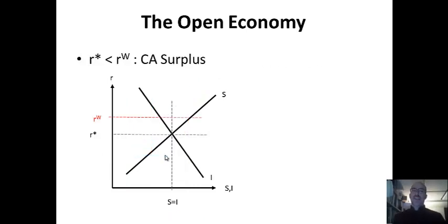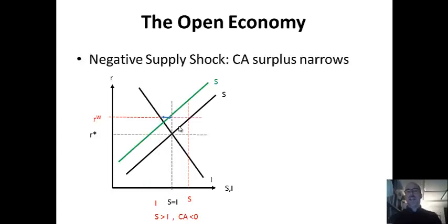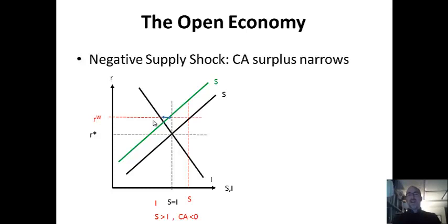Now let's look at a current account surplus. Here the world interest rate is higher than the domestic interest rate. Savers can send their money abroad and earn more, but investors face competition and invest less because capital is more expensive. So you have high savings and low investment — savings greater than investment — and the current account is positive: a current account surplus. This is the lending country where capital is cheap at home and expensive abroad. If we bring back that same negative savings shock, the current account surplus just gets smaller, because they have less money to send abroad.